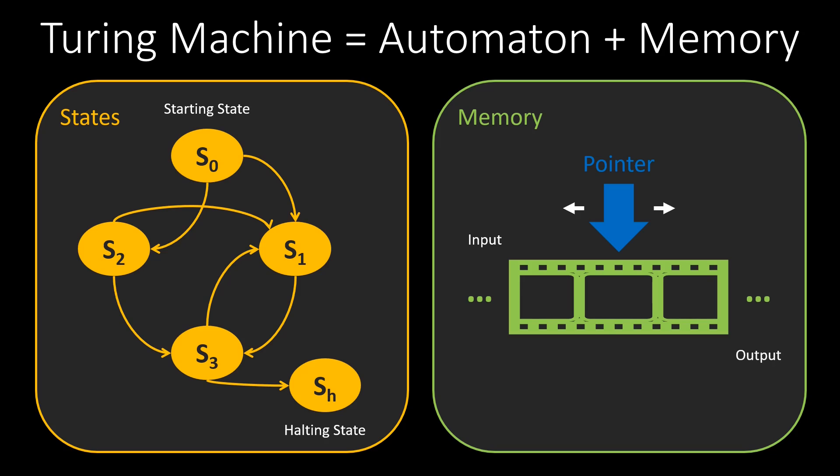When starting the machine, the memory pointer is usually on the first symbol of the input. Each memory cell can store one symbol from a predefined alphabet. For simplicity, we assume an alphabet with three symbols. To represent data, we use binary symbols, zeros and ones. It often helps to have an additional symbol for an empty cell, for example, this bottom symbol.